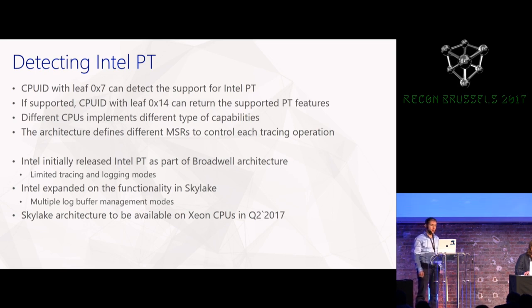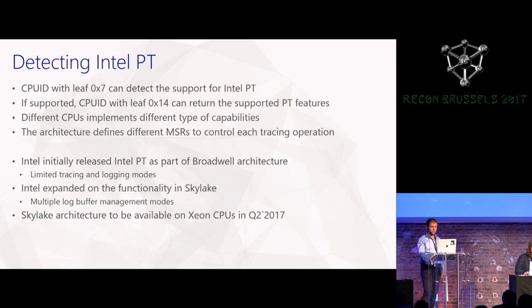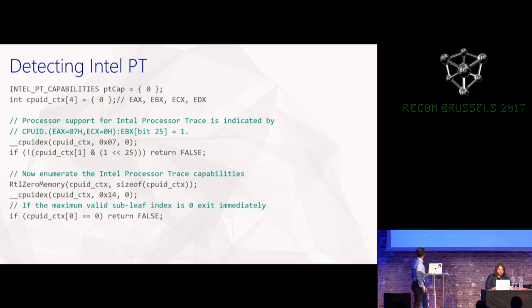Processor Trace was first implemented in Broadwell architectures but was limited. Now in Skylake there is full support and you can trace whatever you would like. The next CPU will be released by Intel in the second quarter of 2017. The code for detecting Processor Trace is quite easy — only a pair of CPUID instructions.